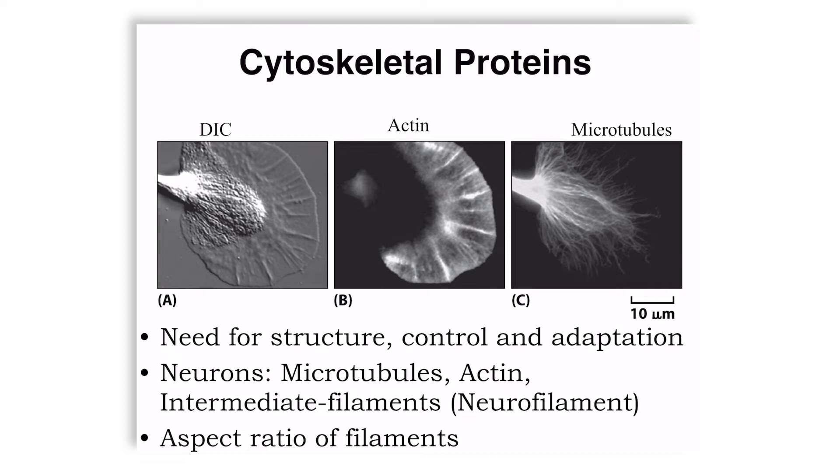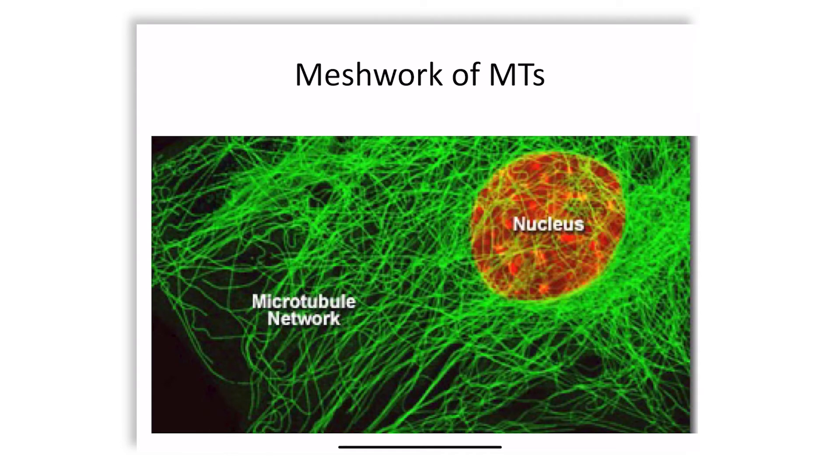You will see these cytoskeletal proteins almost all across the evolutionary chain, and actin and microtubules are the very commonly described ones.